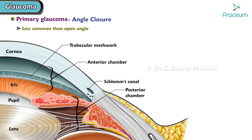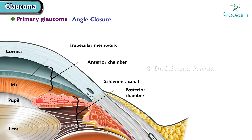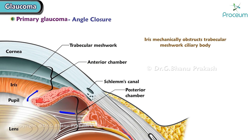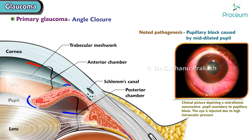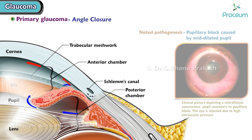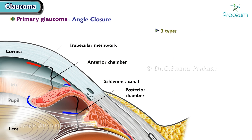Primary angle closure glaucoma is less common than open angle glaucoma but has three times more risk for the development of bilateral blindness. It occurs when the iris mechanically obstructs the trabecular meshwork and ciliary body, leading to increased intraocular pressure. The most noted pathogenesis is the pupillary block caused by a mid-dilated pupil. Clinically, there are three types: acute, subacute, and chronic.